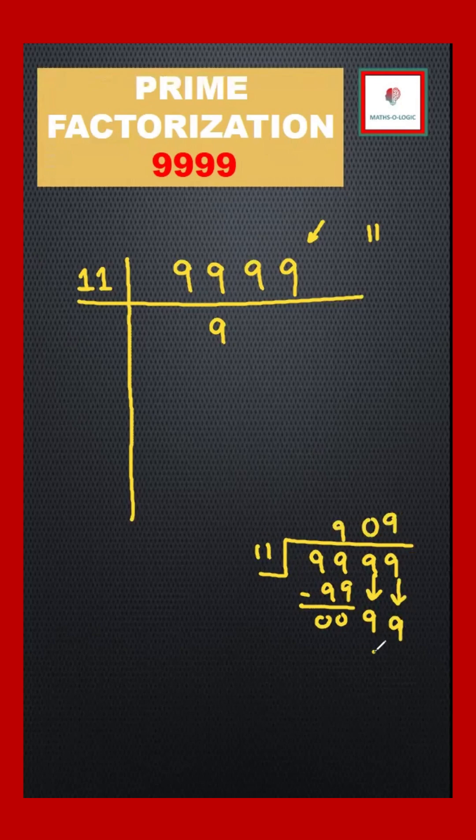This is 9 again. 11 times 9 is 99, and I get 909. So 11 is my first prime factor. Now checking 909 - the sum of the digits is a multiple of 3, so I can divide by 3.